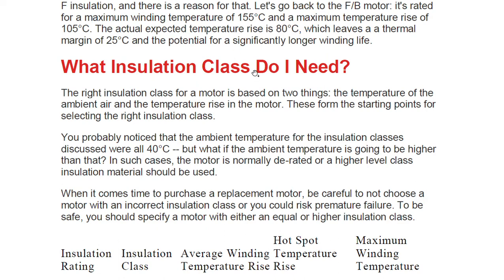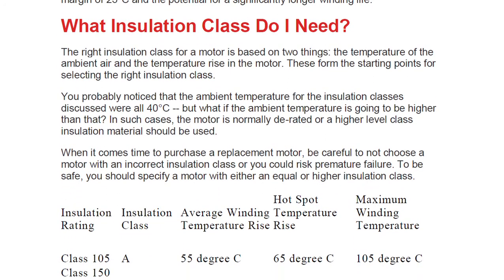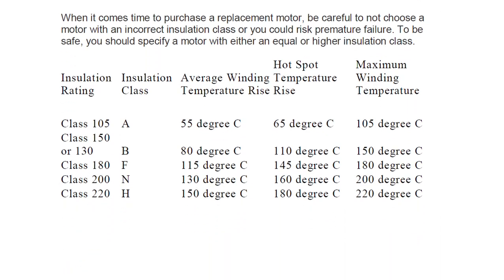The insulation class you need depends on the manufacturer. Looking at the summary table: Class A (Class 105) has an average winding temperature rise, hot spot temperature, and a maximum winding temperature of 105°C. Class B (Class 130) has an 80°C rise and 110°C hot spot. Class F has a 105°C rise, and Class H has higher limits still. These are the different temperature ranges for each insulation class. Thank you for your time — have a wonderful day ahead.